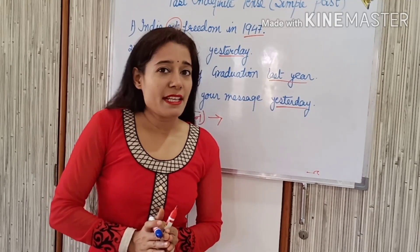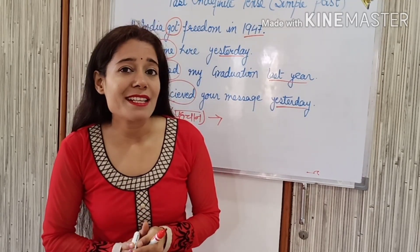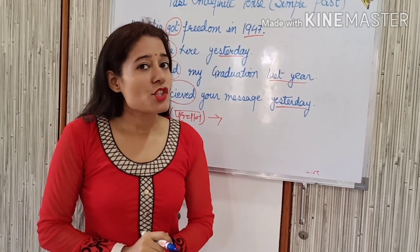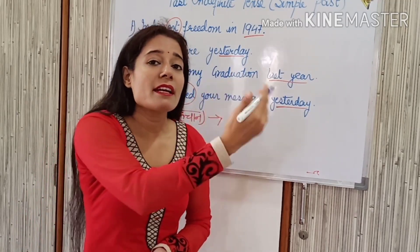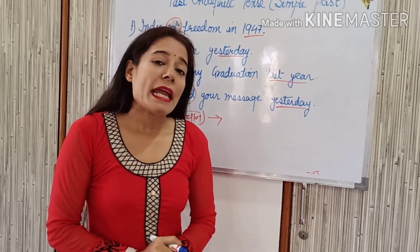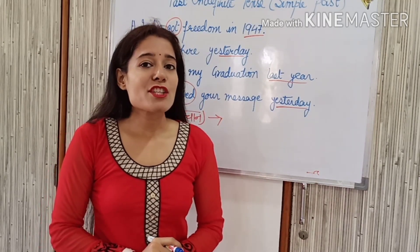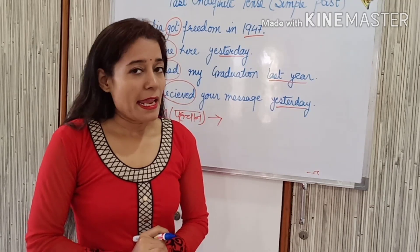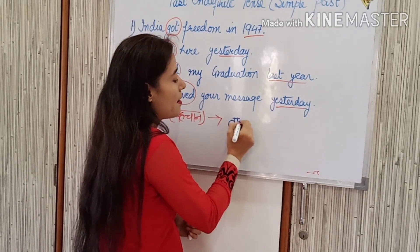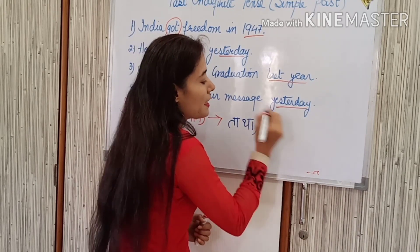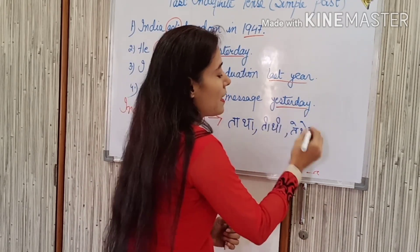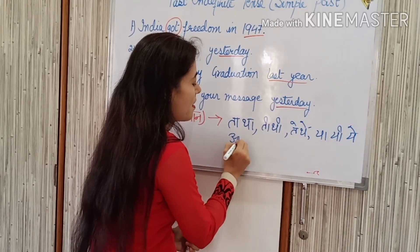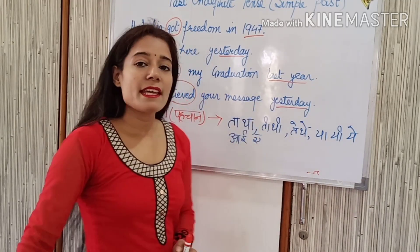If we have a sentence in Hindi and we need to know that it is past indefinite tense, then in that sentence the verbs will end with letters like: ता, था, ती, थी, टे, थे, or या, यी, ये, आ, इ, ए — these kinds of words will appear at the end of the verb.